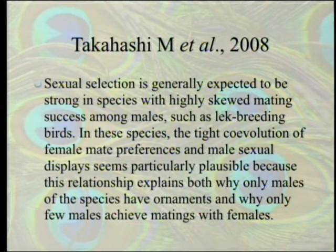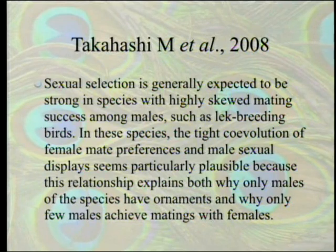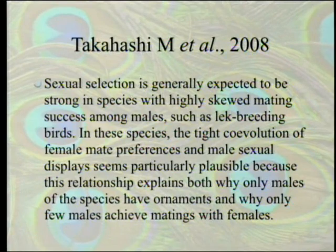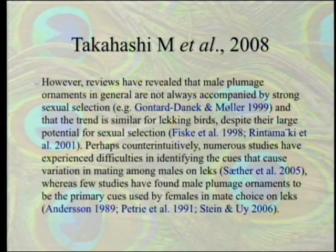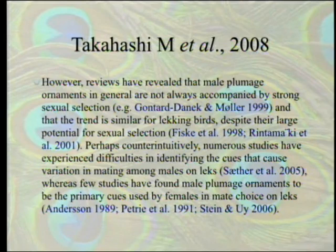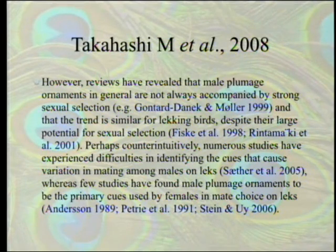What are lek breeding birds? Leks are where all the males find themselves lined up in a row or in a group, and the female birds get to wander around and make their choice of mate — the males try to strut their stuff. In these species, the tight co-evolution of female mate preferences and male sexual displays seem particularly plausible because this relationship explains both why only males of the species have ornaments and why only few males achieve mating with females. However, reviews have revealed that male plumage ornaments in general are not always accompanied by strong sexual selection, and that the trend is similar for lecking birds despite their large potential for sexual selection.